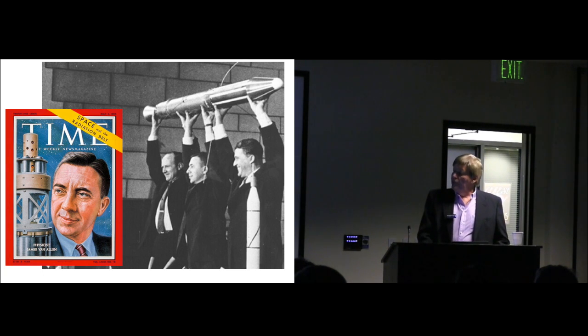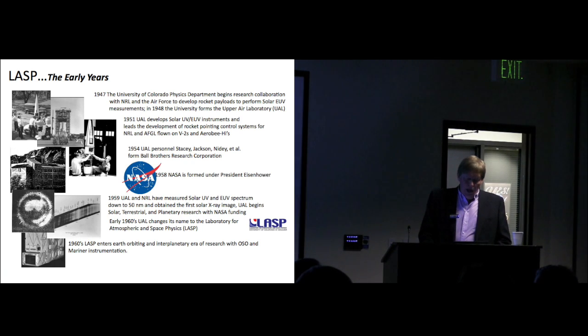I think one can really trace the origin of the concept of space physics back to this sort of seminal moment. In 1958, Dwight Eisenhower formed NASA as an agency on October 1st, 1958. The Upper Air Lab and NRL continued partnership, making measurements of solar UV and extreme ultraviolet, also making first solar X-ray images. The lab really began the solar terrestrial and planetary research with NASA funding at that time.